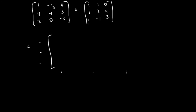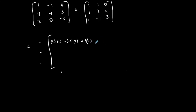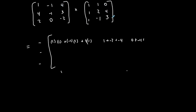Row one, column one: one times one, plus negative one times one, plus four times one. Row one, column two: one times one is one, plus negative one times two is negative two, plus four times negative one is negative four. Row one, column three: one times zero is zero, plus negative one times four is negative four, plus four times three is twelve.